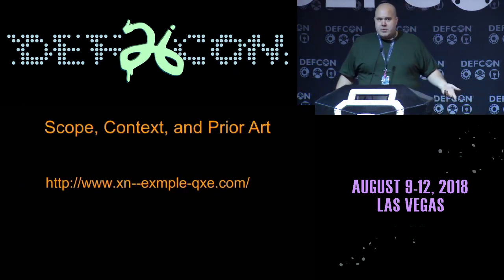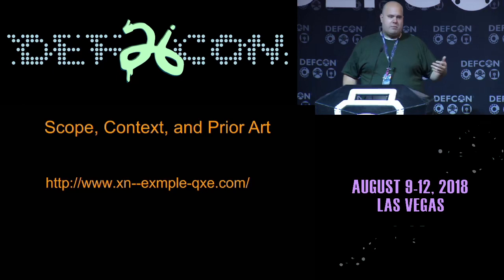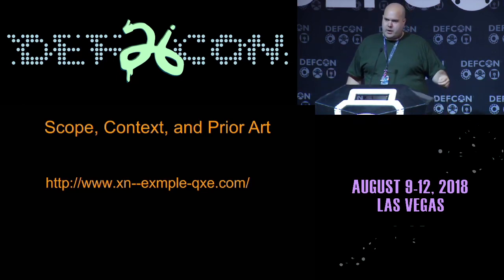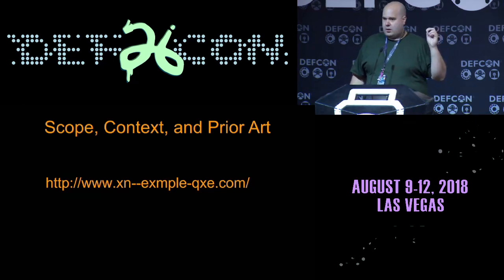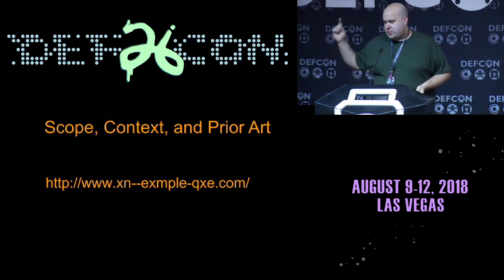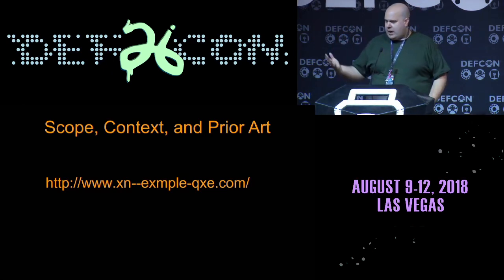Most of the homograph attacks we've seen have been in URLs — you use a character that renders the same to trick a user into clicking on a site and going somewhere they didn't intend. That's mostly handled by using what's called Punycode. For example, 'example.com' could be changed to 'EX lowercase-Greek-alpha MPLE.' If you put that into your browser, it will show you something to indicate you're not going where you thought. So this works — it's the most common threat vector.